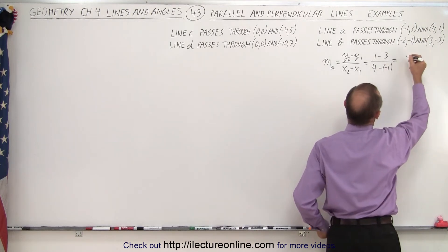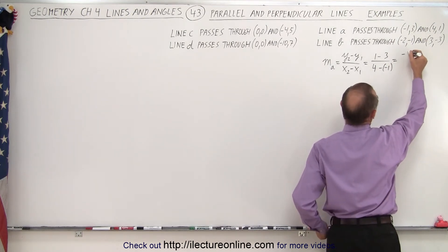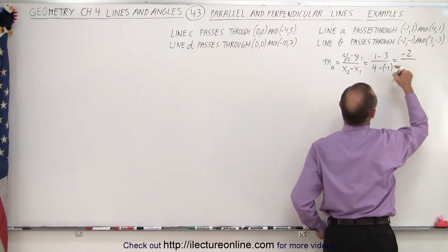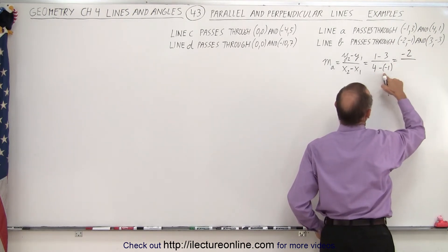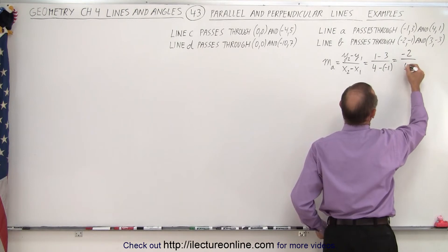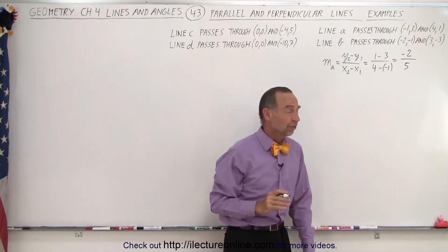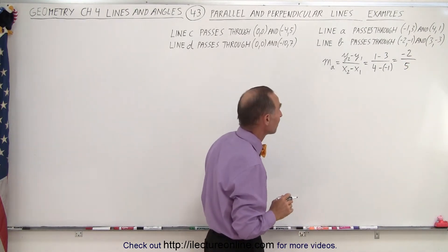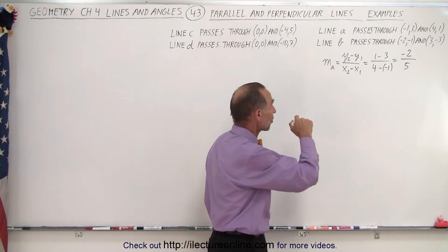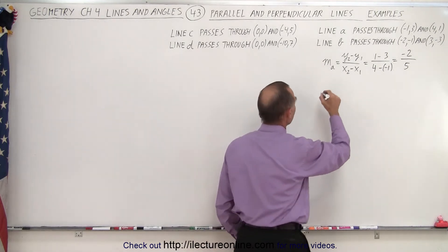So this becomes 1 minus 3, which is negative 2, and 4 minus negative 1, which is 5. So the slope is negative 2 fifths for line A.